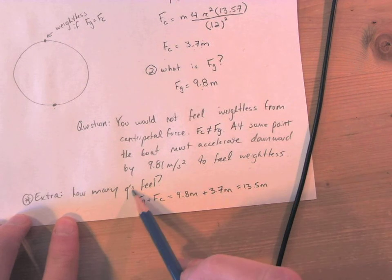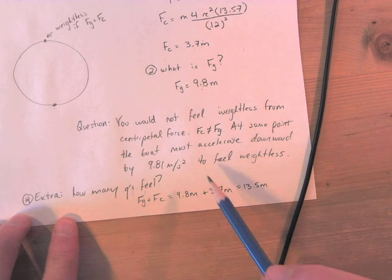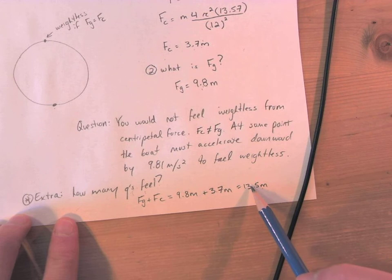But when you talk about g's, you're only talking about the acceleration. You're not really talking about the mass. So overall it's not 13 and a half g's, but that's 13 and a half meters per second squared that you would kind of feel at the bottom.